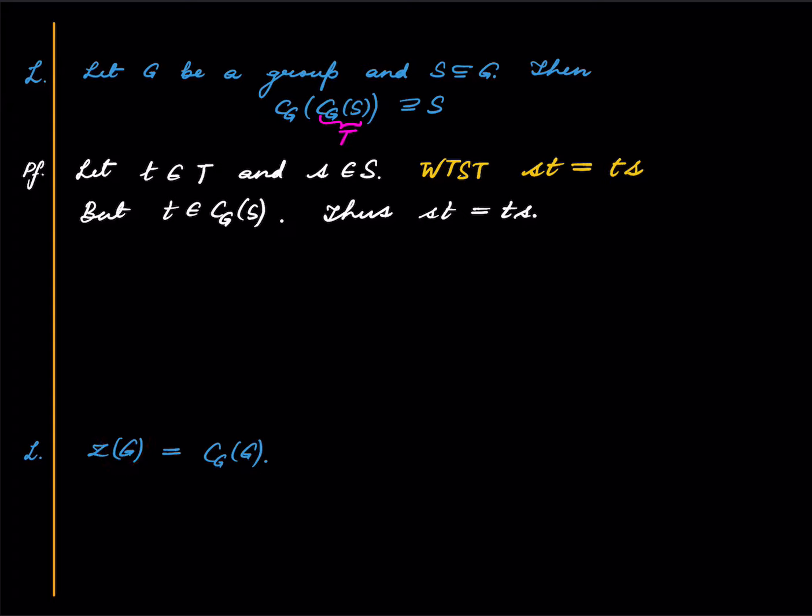Because what is the center of the group? The center is those elements in the group which commute with every element of the group. What is the centralizer of G? It's also those elements of the group which commute with every element. So therefore these two things are the same.